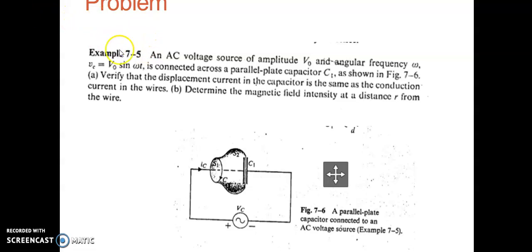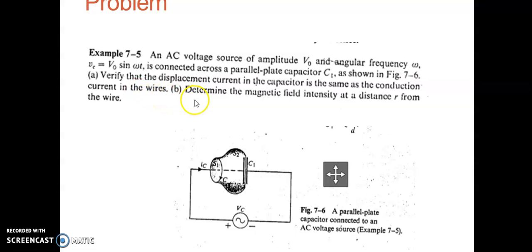Now we will solve a problem. An AC voltage source of amplitude V0 and angular frequency omega, with voltage V_C equals V0 sin(omega t), is connected across a parallel plate capacitor C1. We need to verify that the displacement current in the capacitor is the same as the conduction current in the wires, and also determine the magnetic field intensity at a distance r from the wire.